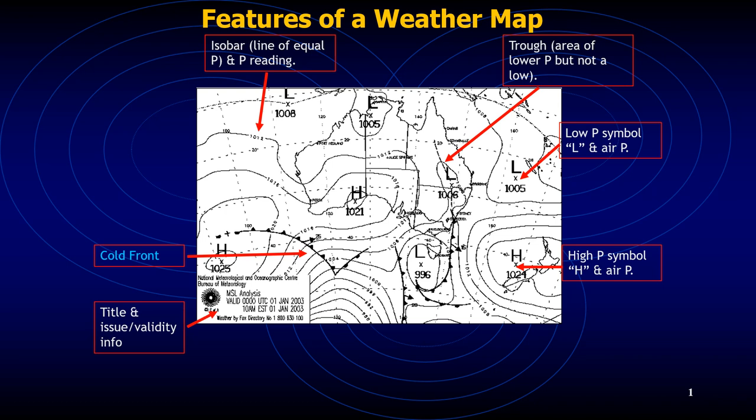In the UK, a trough is represented by a bold line extending from a low pressure center; in Australia it is a dashed line. If not marked, troughs may still be identified as an extension of isobars away from a low pressure center. A trough is an elongated area of low pressure with changes in wind direction across it, but no change in the air mass. The region between two high pressure centers may also assume the character of a trough when a detectable wind shift is noted at the surface.